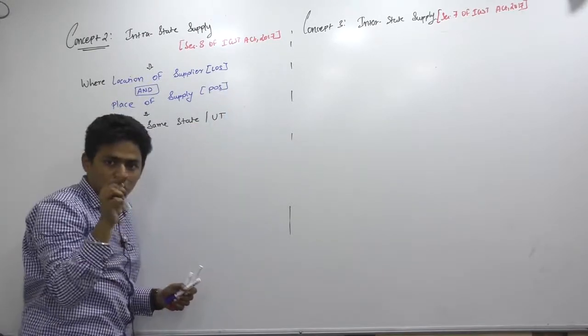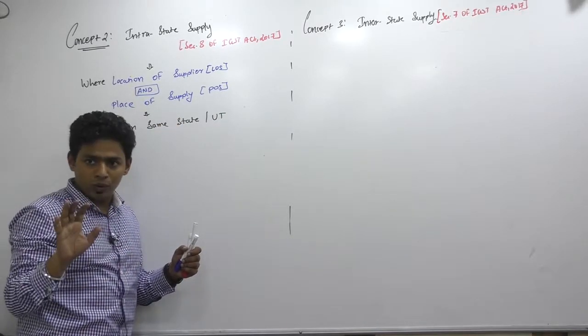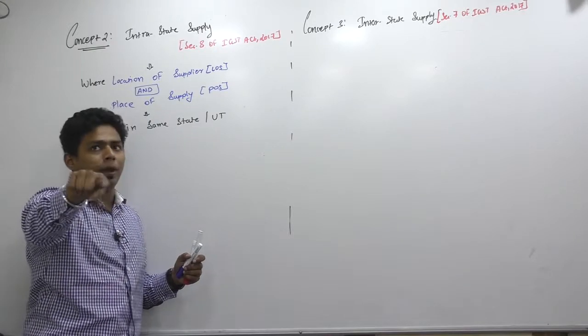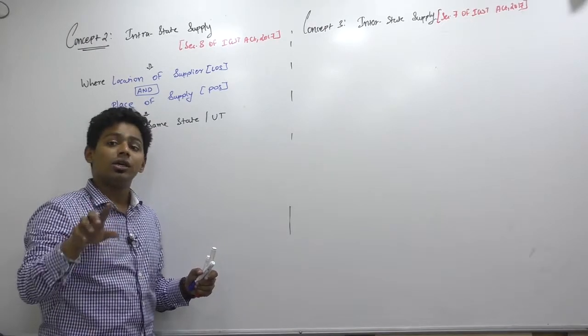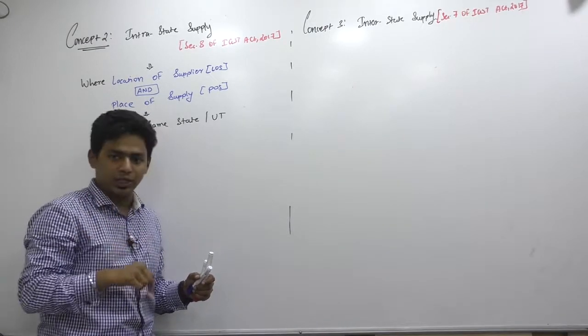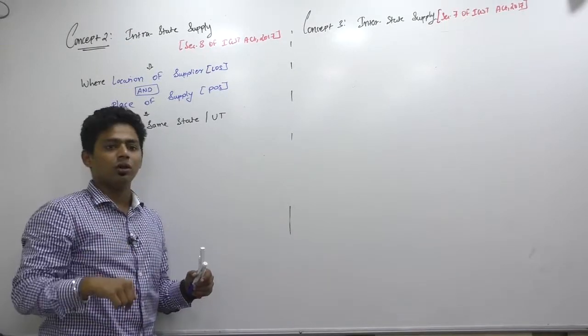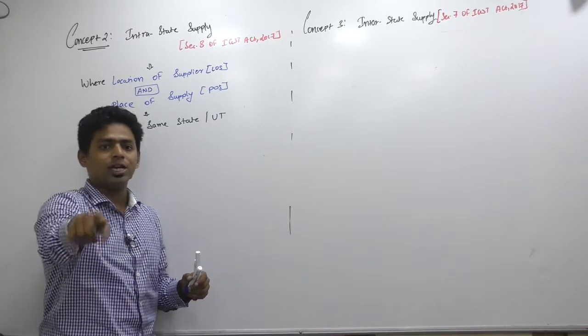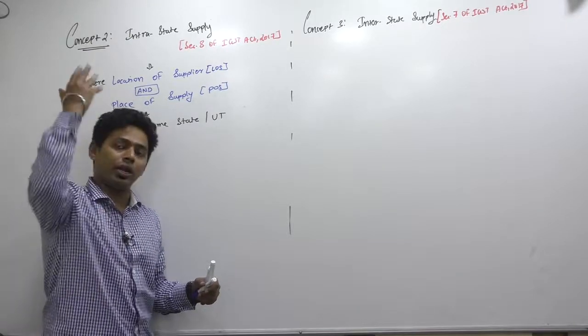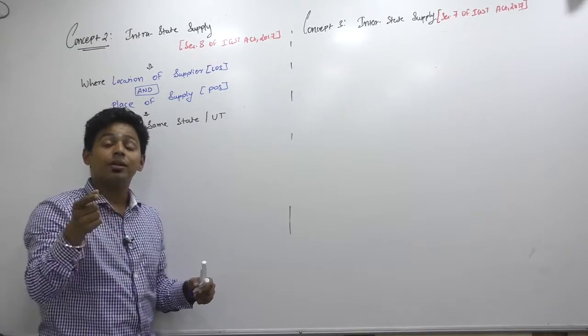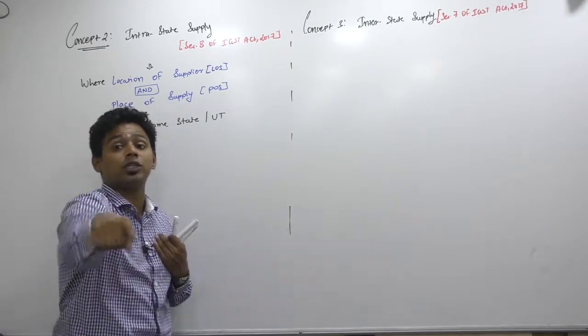You can see location of recipient is not relevant—place of supply is relevant. Now, you are from Maharashtra, I am from Maharashtra. Location of service is Yogeshwari, and this is in Maharashtra. Place of supply is also Maharashtra. But this guy, he is from Kerala. So whatever sections I am teaching to him now, is it interstate or intrastate? Intrastate. Why? Because the location of supplier—this is my location—and place of supply, services are happening here.